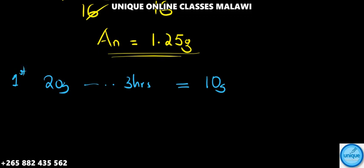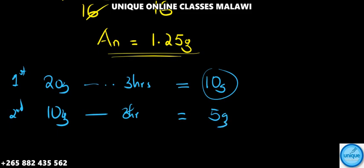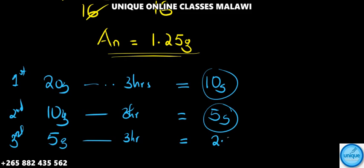For the second half-life, we have 10 grams as the initial mass. After 3 hours, half of 10 is 5 grams. For the third half-life, half of 5 is 2.5 grams.